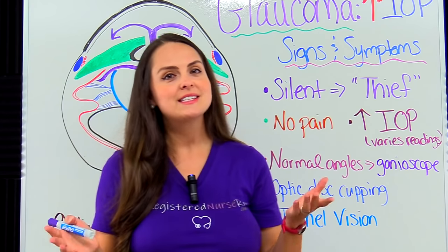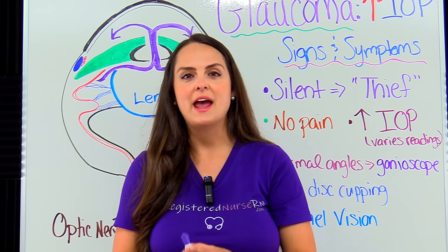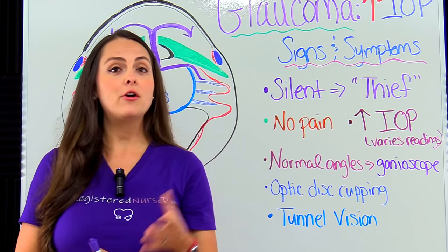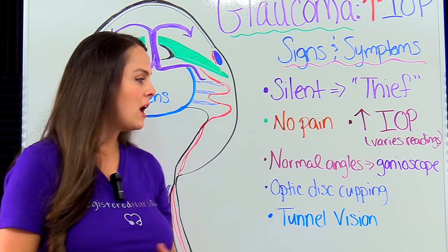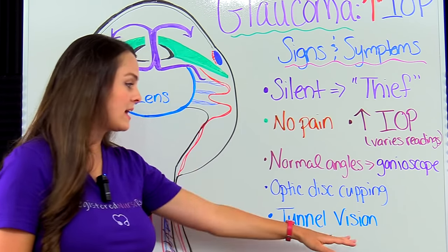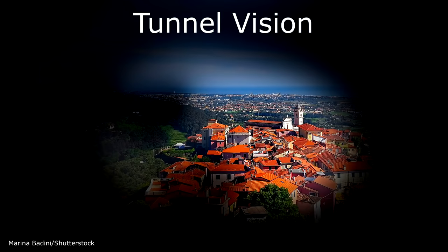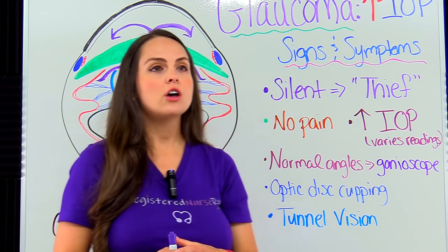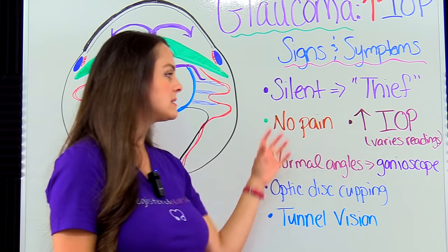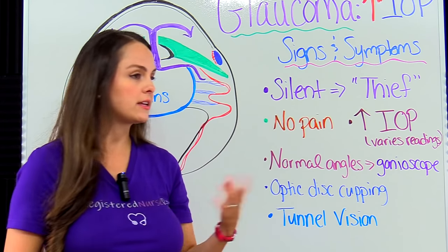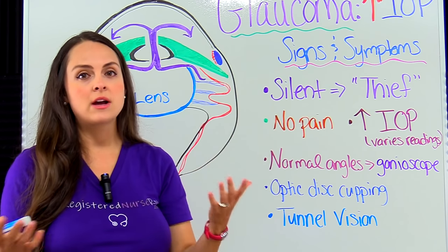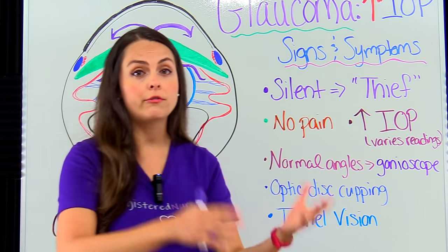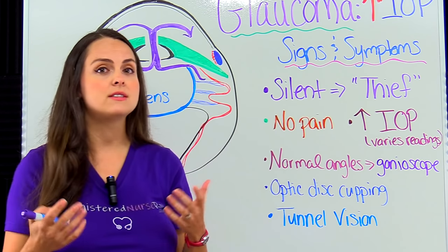Now let's talk about the signs and symptoms of open angle glaucoma. As noted earlier, the signs and symptoms appear very subtly. When patients actually notice tunnel vision — the loss of peripheral vision — that means the disease has advanced. Through early detection, we can identify other signs and symptoms. It's silent in its presentation, and you may hear it referred to as the thief of sight.